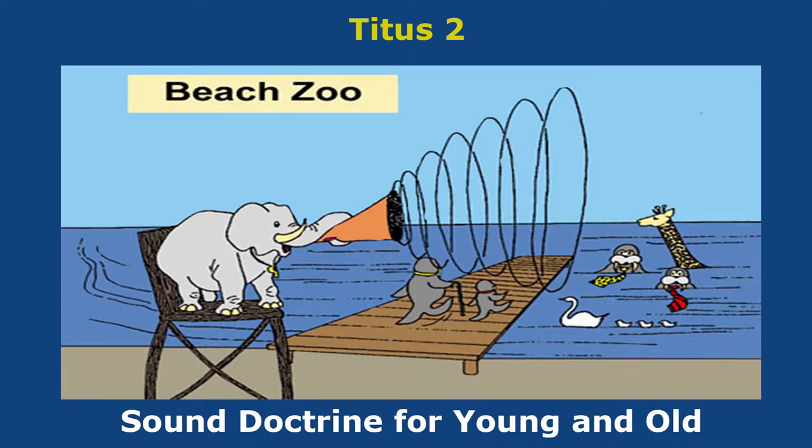Titus chapter two. Chapter two rhymes with zoo. Sound Doctrine — the elephant is sounding his horn, trying to stop the walrus from running on the dock. It's a dock run for doctrine.